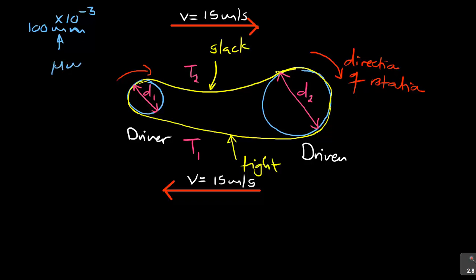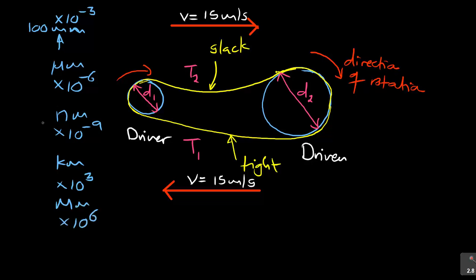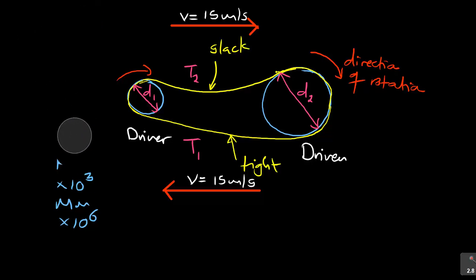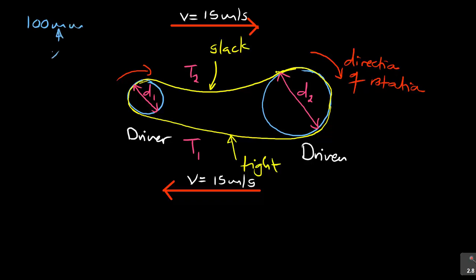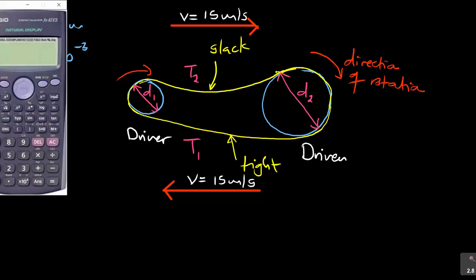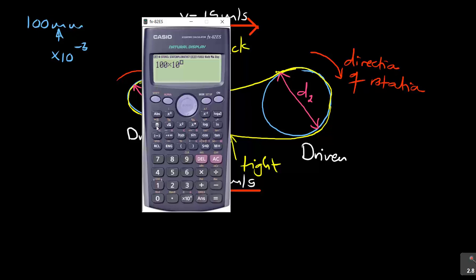Now let us look at question 5.2.1: calculate the power transmitted by the belt drive. From the formula sheet, power P equals the effective force Fe times velocity V. The effective tension force Fe was given as 350 Newtons, and the linear velocity V is 15 meters per second. So: P = Fe × V = 350 × 15 = 5250 Watts.